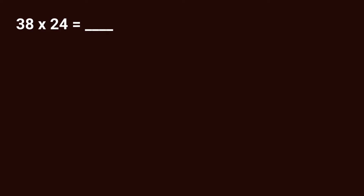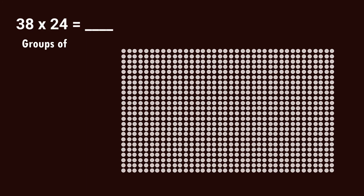But before we really get into partial products, let's take a look at what this multiplication problem looks like when we use our distributive property knowledge. Here we have 38 times 24, and we can read that as 38 groups of 24, because multiplication is repeated addition.